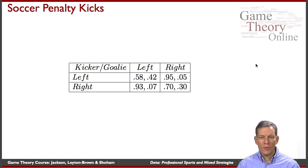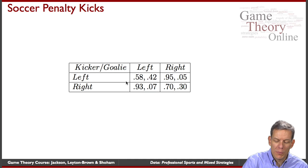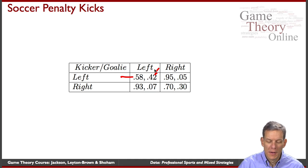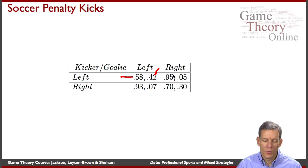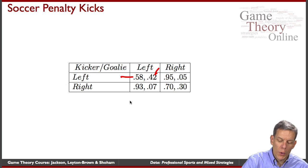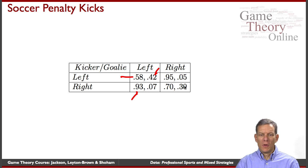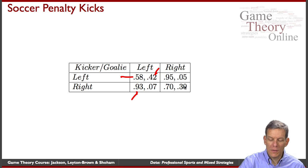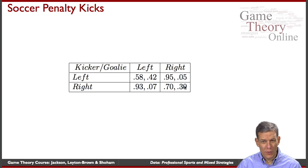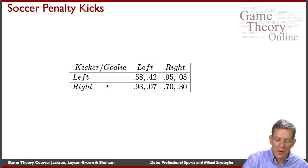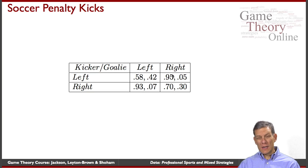Based on the 1,417 penalty kicks, here are the averages. When kickers go left and goalies go left, kickers win 58% of the time, goalies win 42%. When the kicker goes left and the goalie goes right, the kicker wins 95% of the time. If the kicker goes right and the goalie goes left, the kicker wins 93% of the time. So there are biases and asymmetries here.